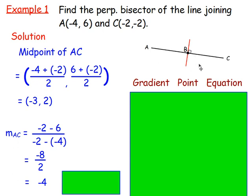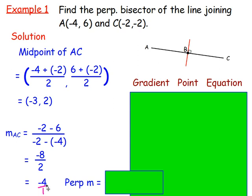But you want to work out the perpendicular gradient. And to get the perpendicular gradient, remember you could just write a whole number as negative 4 over 1. So turn it upside down, so it becomes 1 over 4. And instead of having a negative, you would have a positive. So it just becomes 1 over 4.